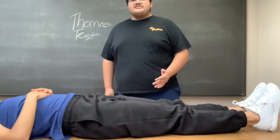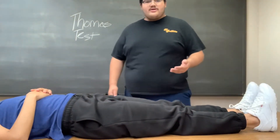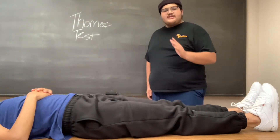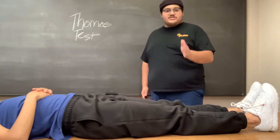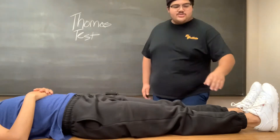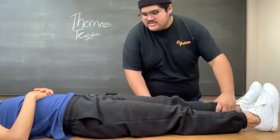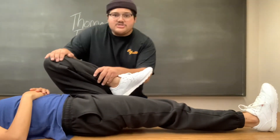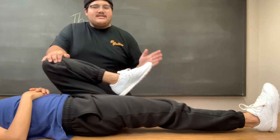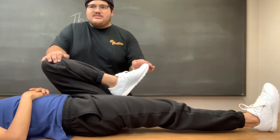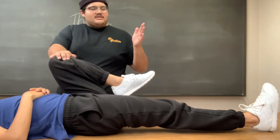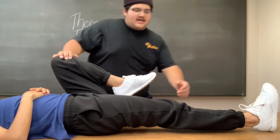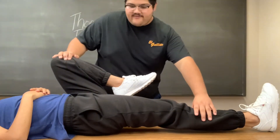In order to begin the Thomas test, we are going to start with the unaffected leg first. We are going to bring the patient's unaffected leg into full hip and knee extension. Any positive symptoms will be shown by the affected leg coming up with the unaffected leg.